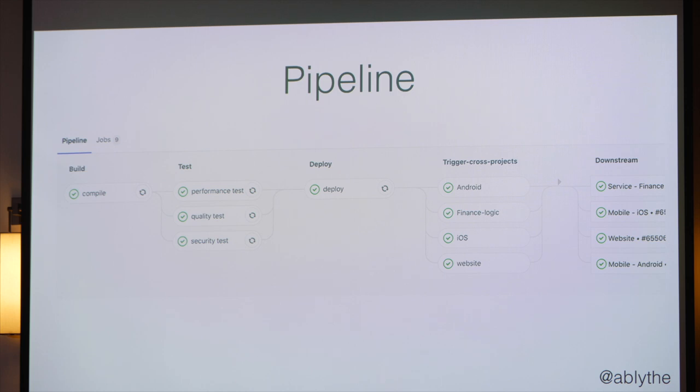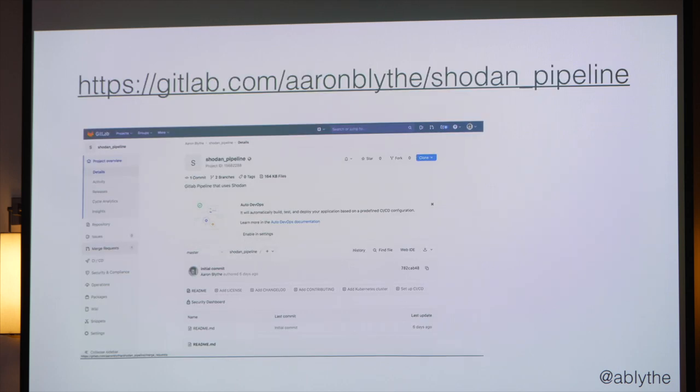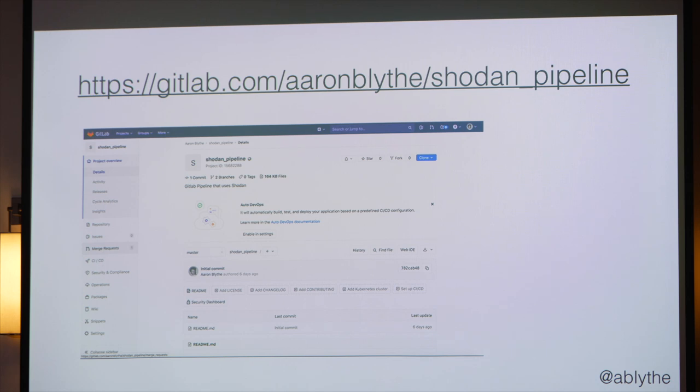My tool of choice is GitLab — if you use Jenkins or whatever, most of what I'm going to do is simple bash stuff, so you can utilize these things in your pipelines. For those that want to follow along at home, you may want to go to GitLab.com/AaronBlythe/shodan_pipeline. I submitted to this conference a general talk that I do on Shodan because I wanted to come down to Austin. James suggested: what if you do Shodan for DevSecOps, since that's what this conference is about? So I started Googling around and I haven't found any libraries that just make this easy. So what we're going to do is build it from scratch — together.